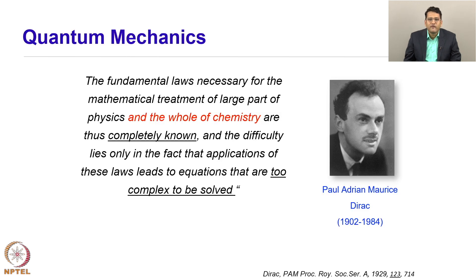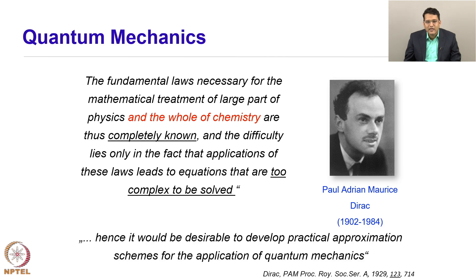One of the most famous quotations of Dirac states that the fundamental laws necessary for the mathematical treatment of a large part of physics and the whole of chemistry are thus completely known, and the difficulty lies only in the fact that the application of these laws leads to equations that are too complex to be solved. Hence, it would be desirable to develop practical approximation schemes for the application of quantum mechanics. This statement, in a sense, gives you the flavor of computational chemistry — we use the laws of quantum mechanics and apply them to chemical problems in an approximate format.